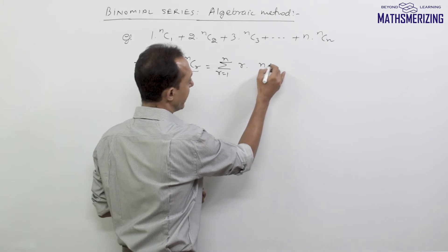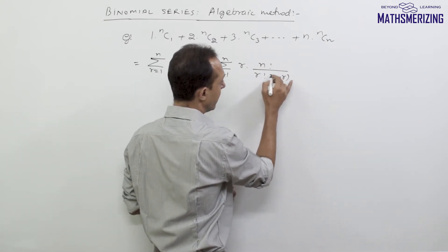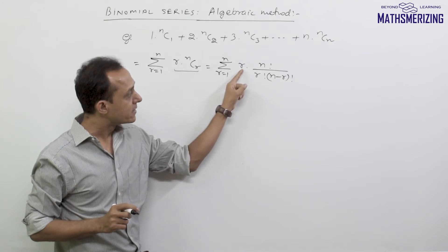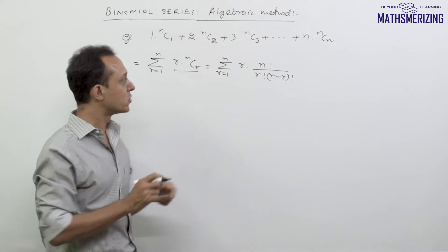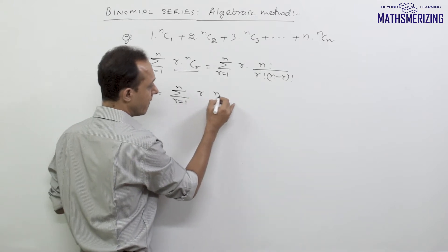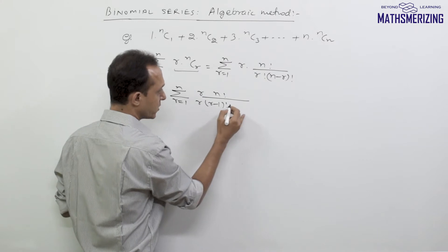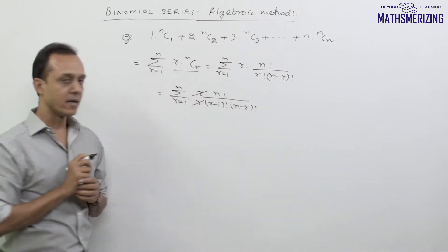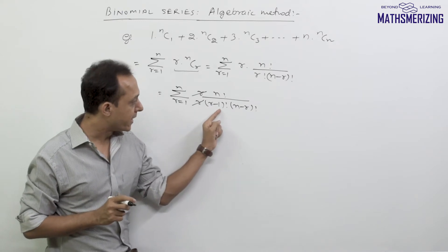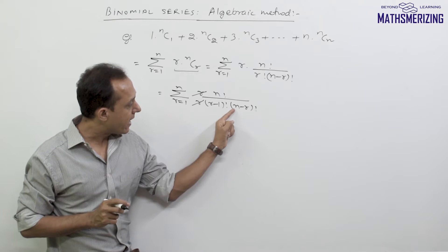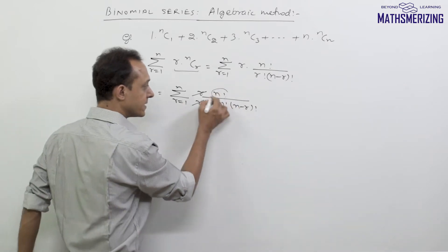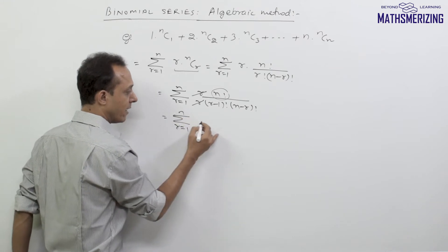I'll expand and write the summation from r=1 to n of r · [n! / (r! · (n-r)!)]. I have a problem with this r — I do not want this r here. So I can cancel this r with r · (r-1)!, meaning r and r will cancel. I can simply write it as summation r from 1 to n of n! / [(r-1)! · (n-r)!]. Now I want to express this in terms of nCr. I see r-1 and n-r, so I can express it as (n-1) - (r-1), where the 1s cancel. So I'll write n · summation r from 1 to n of (n-1)! / [(r-1)! · (n-r)!].